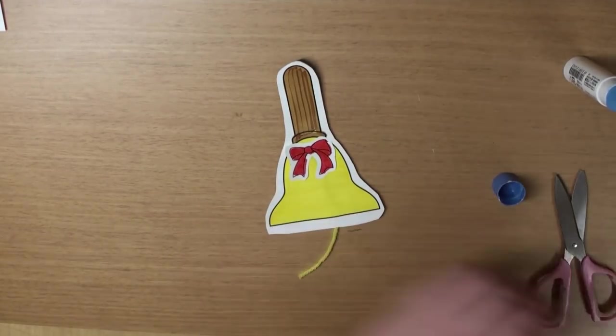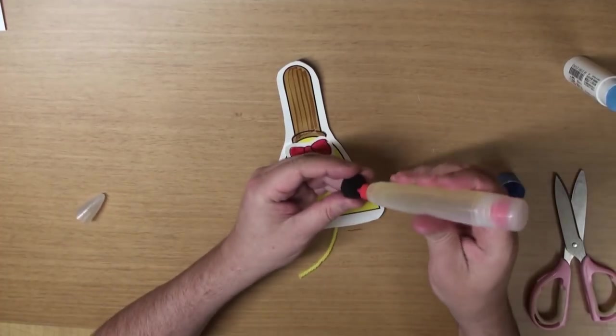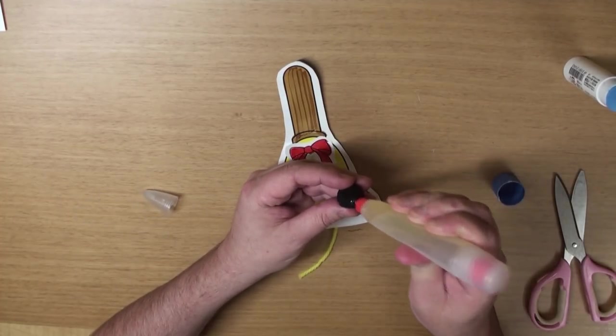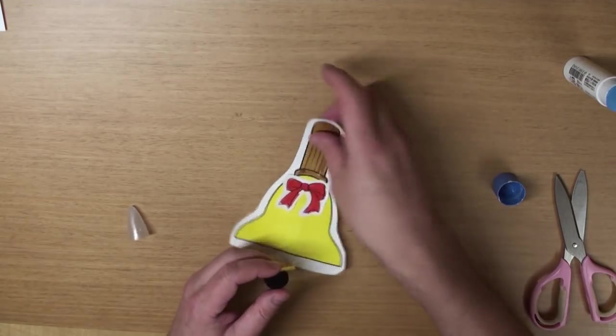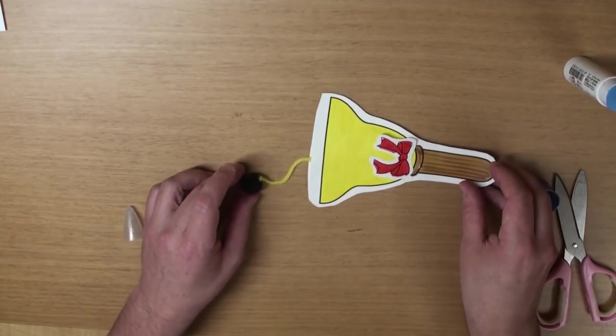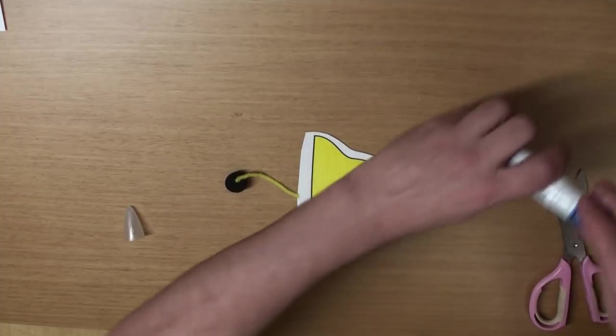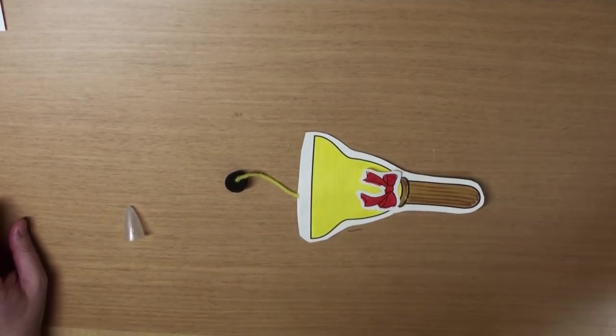Now, grab your pom-pom, and we're going to put lots of glue on that, okay? And glue it to your string. Let's just leave this for a little while until it dries, okay? Yeah!